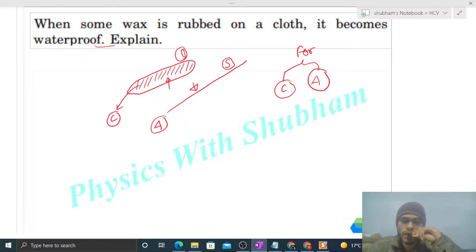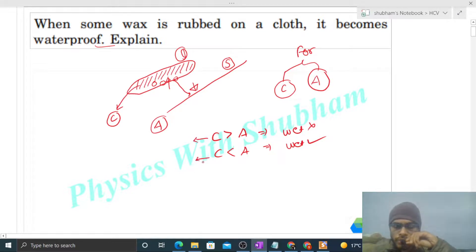So if cohesive force is greater than adhesive force, then the surface will not be wet. In that case, the angle of contact will be obtuse. And in the case where the surface gets wet, the angle of contact will be acute.